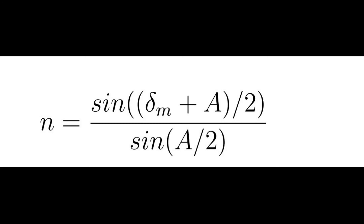Using the formula n = sin((δm + A) / 2) / sin(A / 2), and substituting the angle of the prism and the calculated angle of minimum deviation, we obtain the refractive index of the prism.